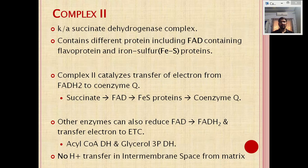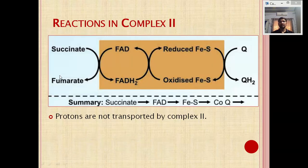Unlike Complex 1, the energy released during electron transport through Complex 2 is very small. So in Complex 2, no protons are transferred from the matrix to the intermembrane space — there is insufficient energy to do so. Succinate is oxidized and coenzyme Q is reduced to quinol, but there is no proton gradient generated from Complex 2.